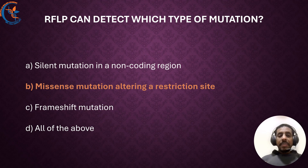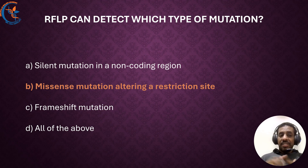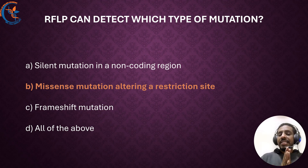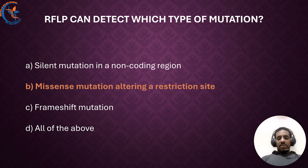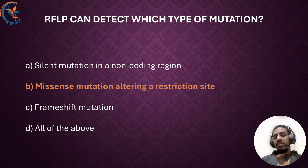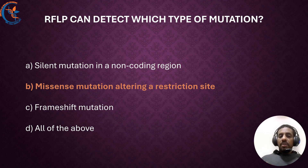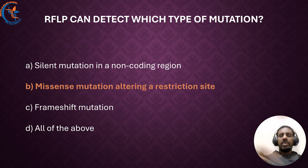RFLP can detect which type of mutation? RFLP can detect missense mutations that alter restriction enzyme recognition sites. This type of mutation changes a nucleotide in the recognition sequence, either creating or destroying a restriction site, resulting in different fragment lengths when DNA is digested. Silent mutations or frameshift mutations typically do not alter restriction sites and therefore do not affect fragment lengths detected by RFLP.